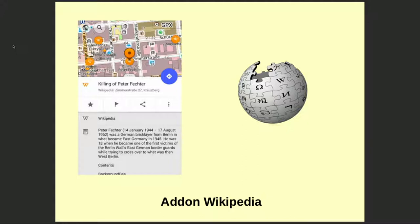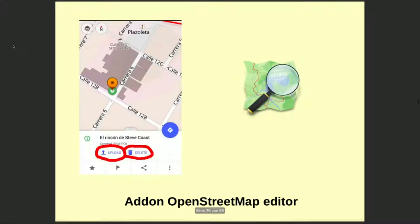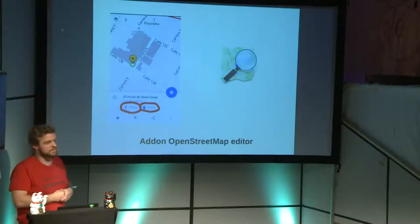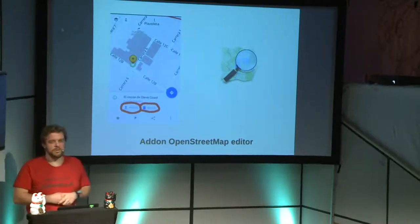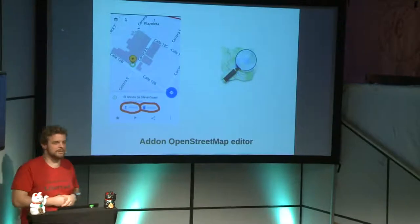Another great add-on: if you're into mapping, there's an add-on that makes it very simple to add information to OpenStreetMap. If you find a nice bar or shop that's not on the map yet, it takes one minute to mark the point, describe it, and upload it to OpenStreetMap — and the world is just one bit better.